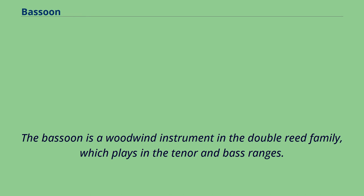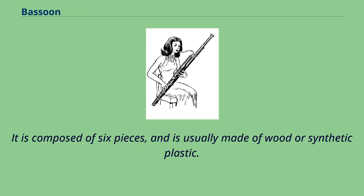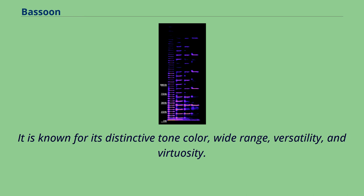The bassoon is a woodwind instrument in the double reed family, which plays in the tenor and bass ranges. It is composed of six pieces and is usually made of wood or synthetic plastic. It is known for its distinctive tone color, wide range, versatility, and virtuosity.